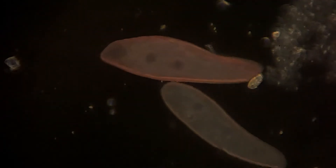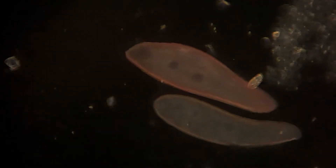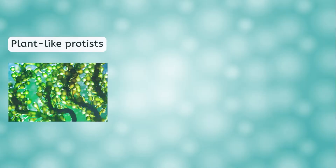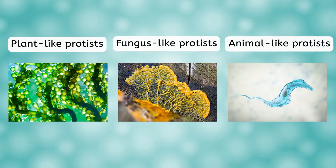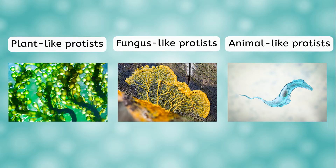Protists can be divided into three distinct groups based on the kingdoms they are most similar to: plant-like protists, fungus-like protists, and animal-like protists. It is thought that protists represent species closely related to the common ancestor of each of the other three kingdoms. Pause the video for a moment and in your notes, record some ideas about what you think the common ancestor of plants, fungi, and animals may have been like. As we go through the lesson, see if any of your predictions exists within the protist kingdom.